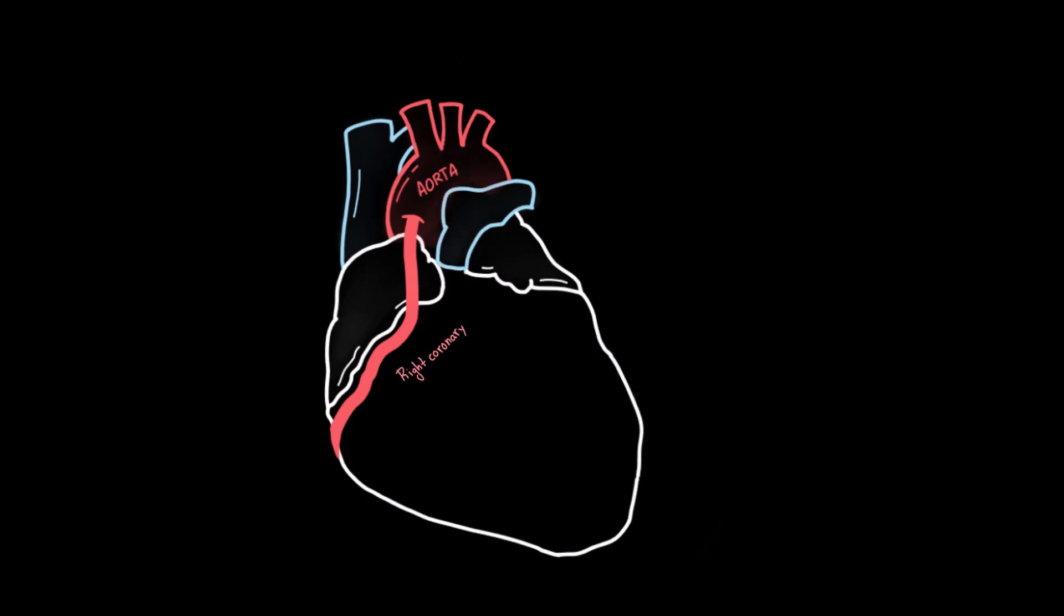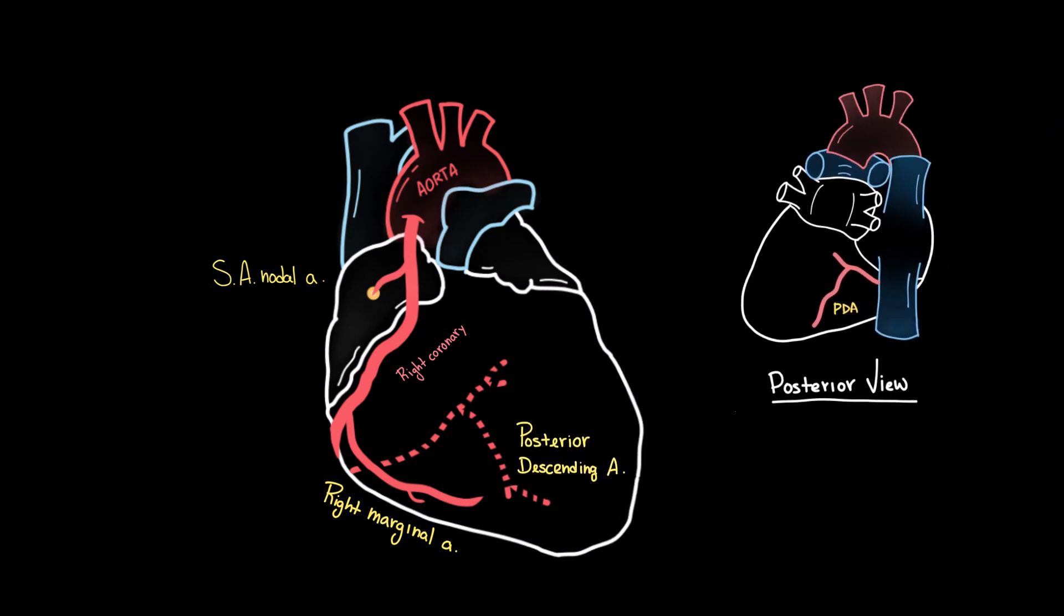It gives off several branches. The sinoatrial nodal artery that goes up and supplies the SA node, which is the heart's natural pacemaker. The right marginal artery that runs along the right margin of the heart, supplying the right ventricle. And finally, the posterior descending artery, also known as PDA, that descends along the posterior surface of the heart.